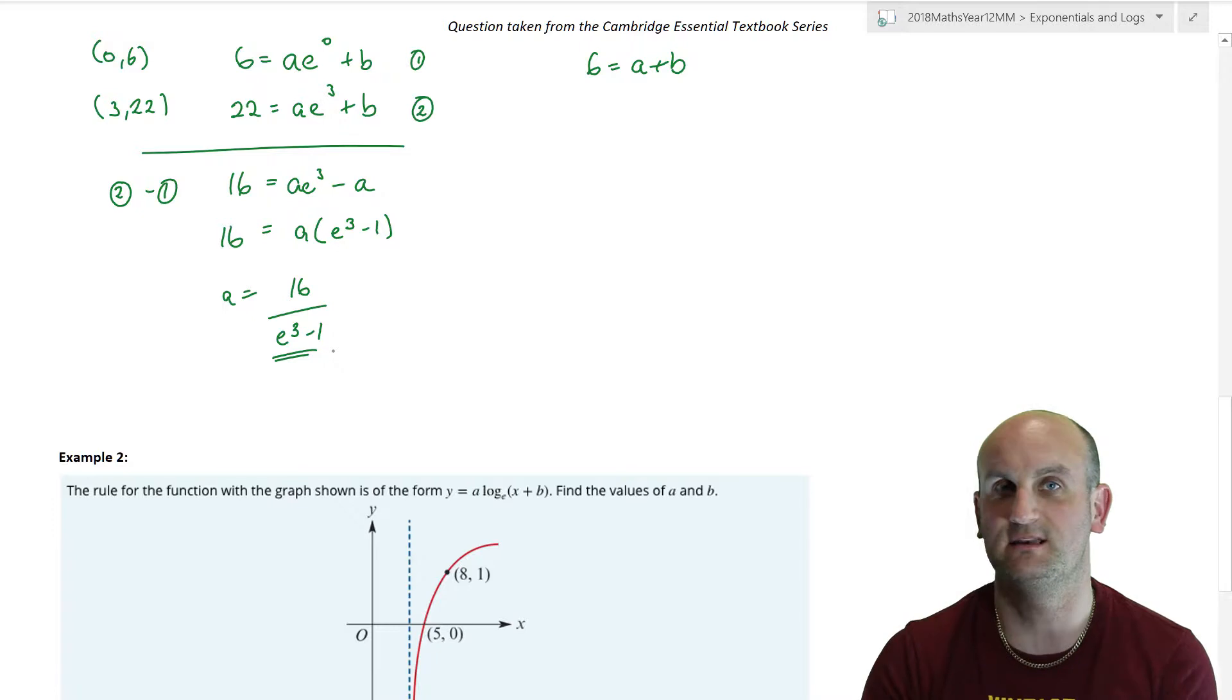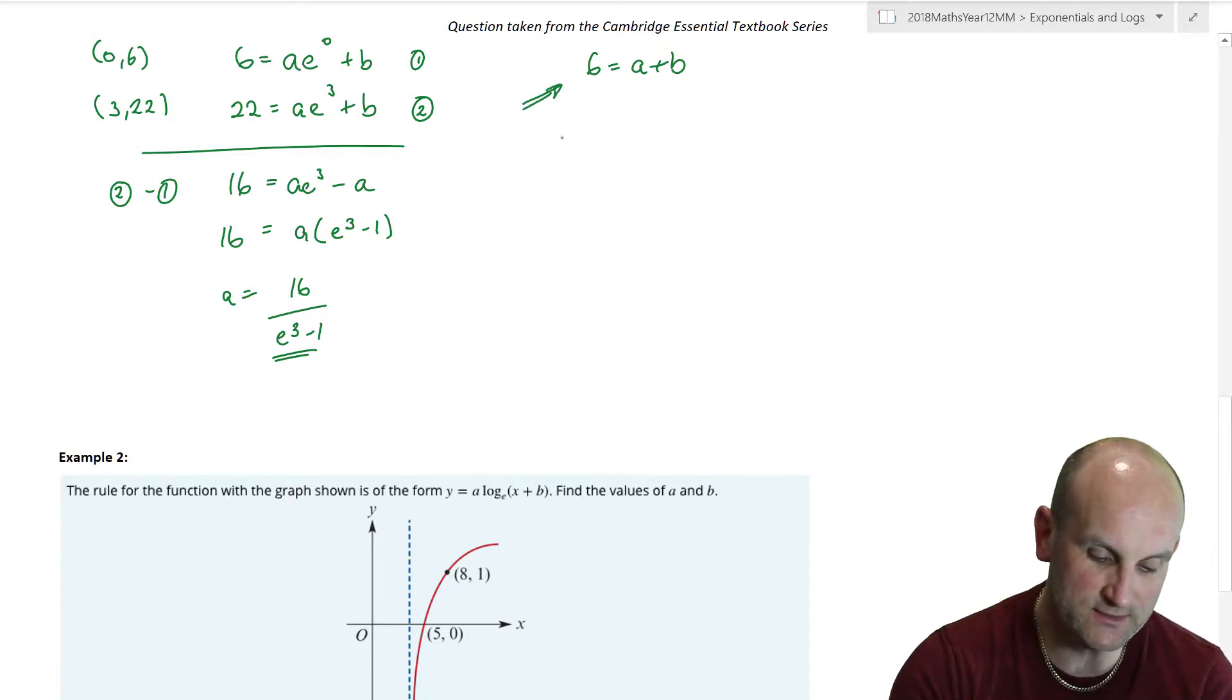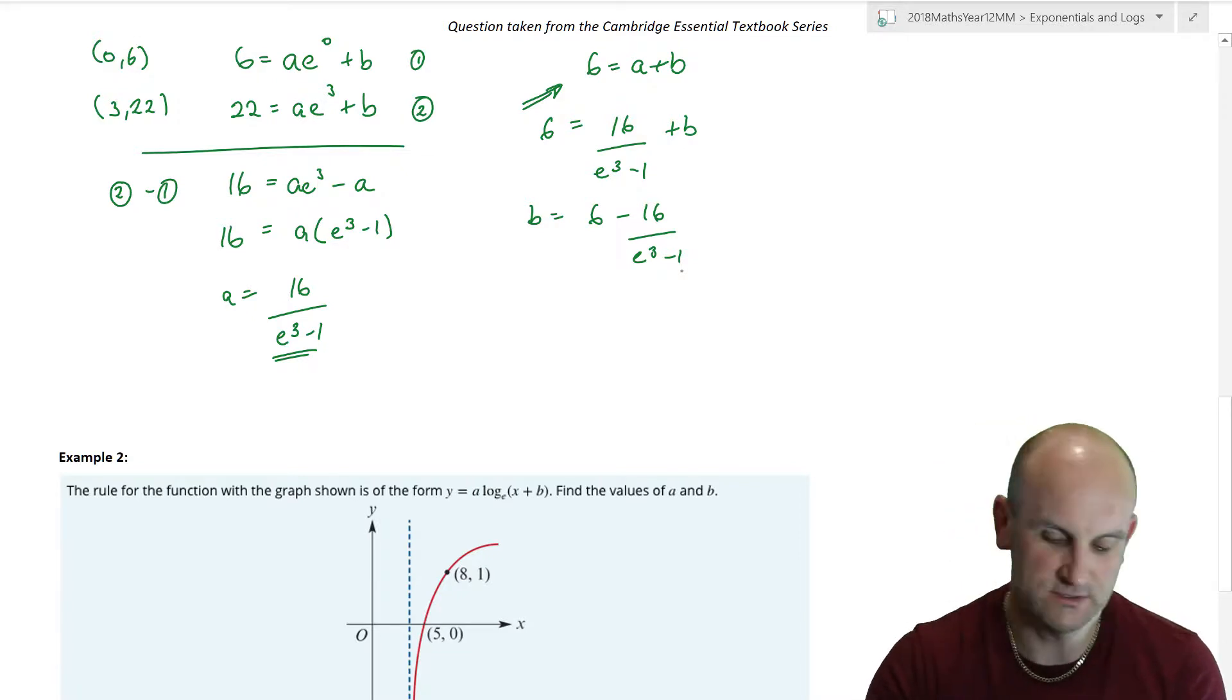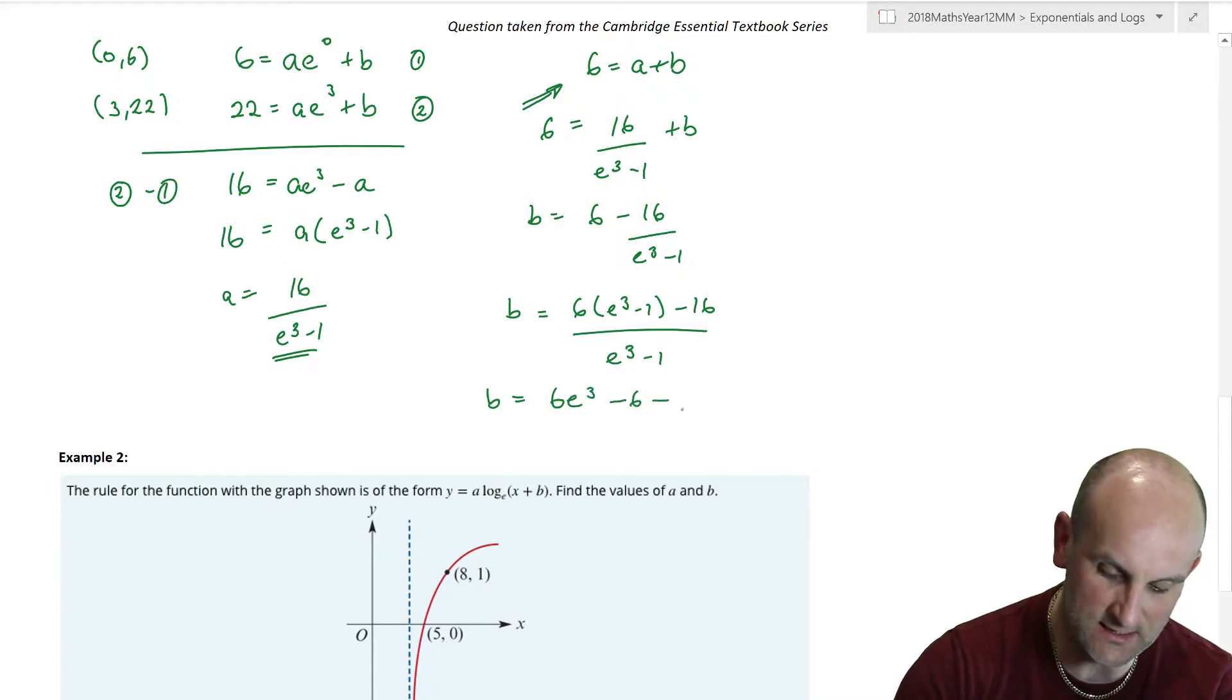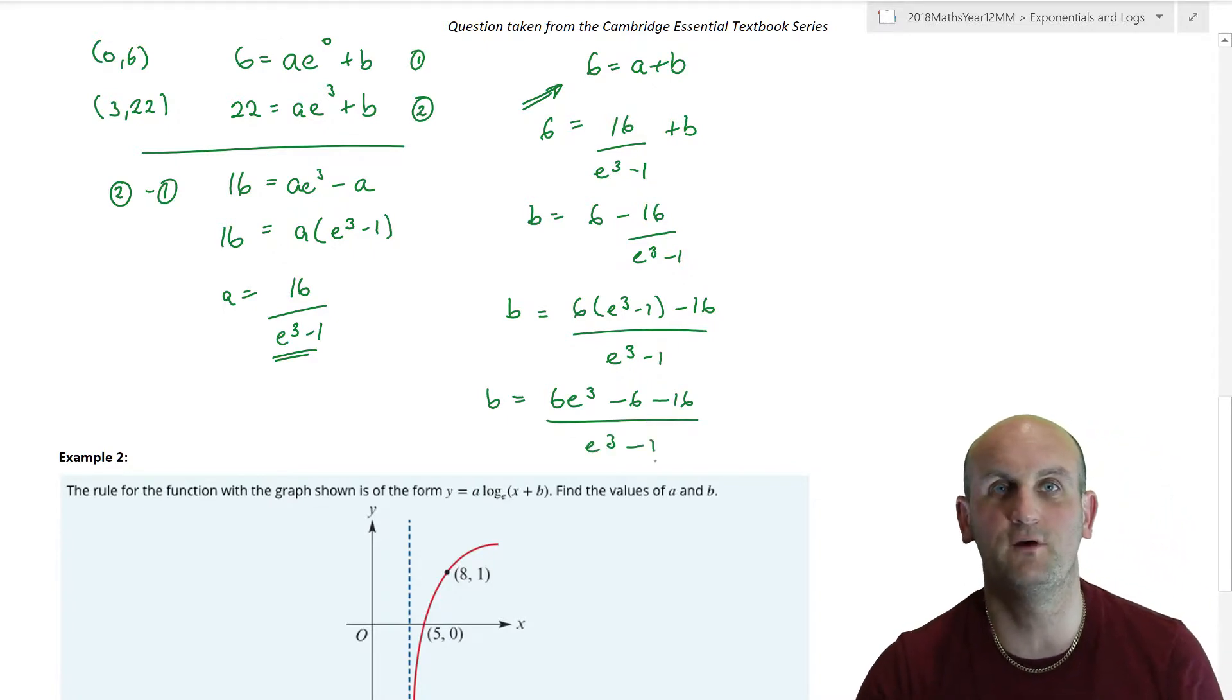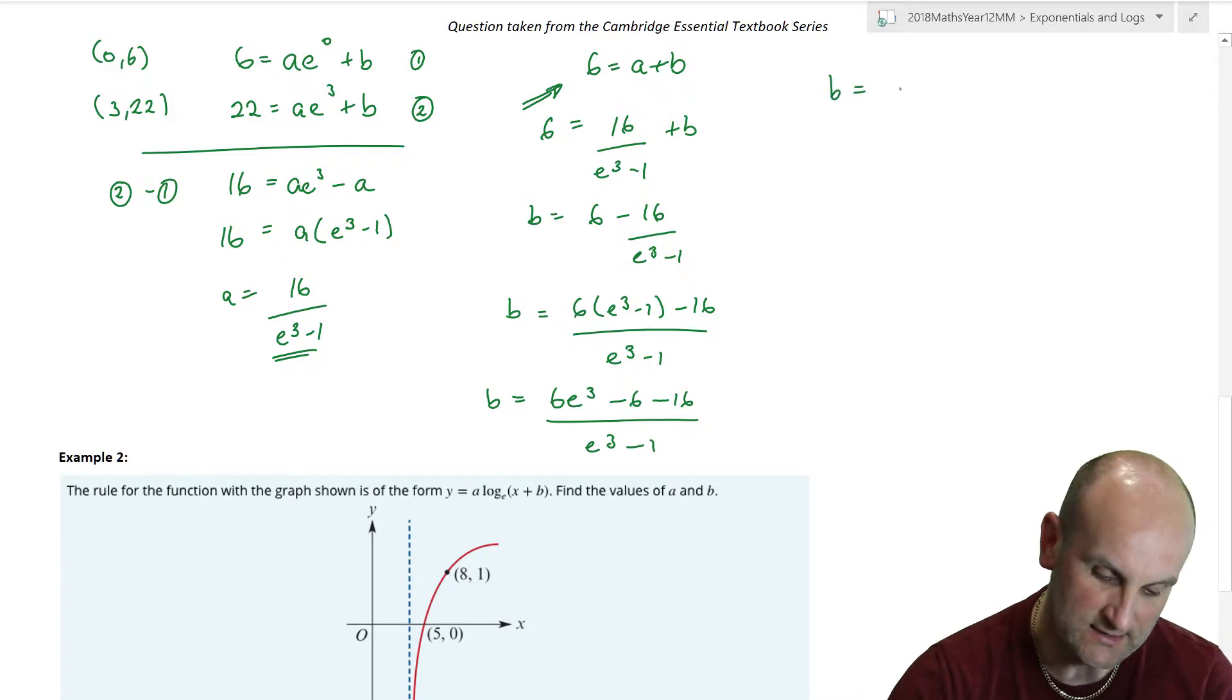So I'm actually going to factorise that and give me a is e to the 3 minus 1, which gives me that a is equal to 16 divided by e to the 3 minus 1. Now if you wanted to you could bang it into your calculator and come up with a decimal representation, but I wouldn't. Particularly over here in Australia with methods you would be looking for an exact value, and that is about as exact as you're going to get it. It also doesn't help us to actually round it to decimal places because we're going to lose some accuracy. So there's my value of a. How do I find my value of b? Well we can go back to that equation you mentioned slightly earlier, this one here.